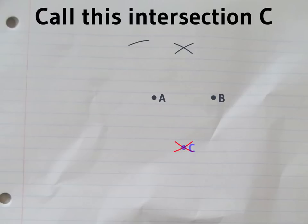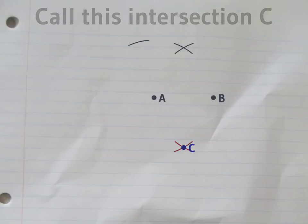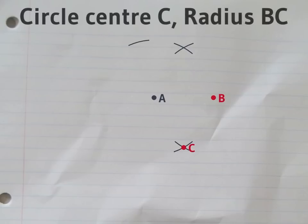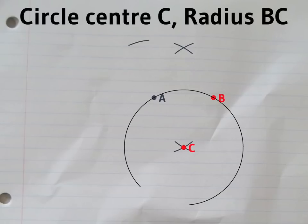Call this lower intersection C. With the compass at the same radius, draw a circle centred on C now.